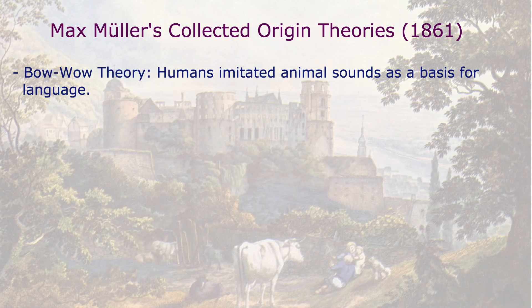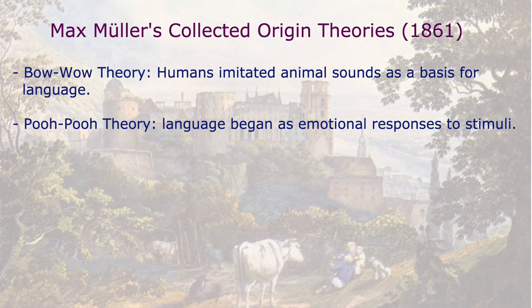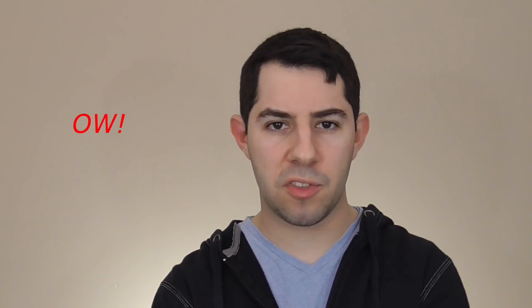The next theory was the Poopoo Theory, where he stated that human language started as an emotional response to things like pain, pleasure, and surprise. We can see this in modern English words such as OW when you stub your toe on the bed for the 14th time today.